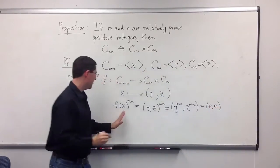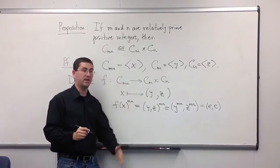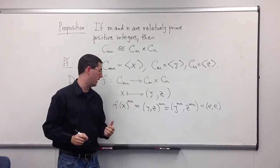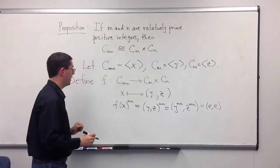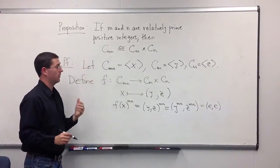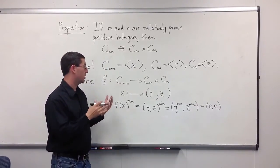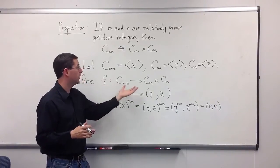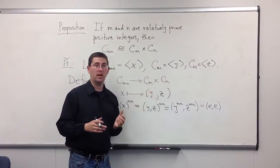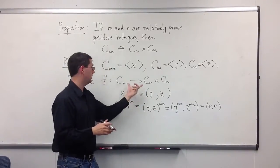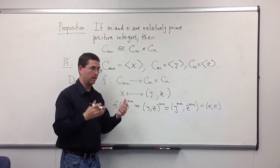This immediately tells us that since f applied to the generator satisfies the same relation as the generator, f is going to be a homomorphism. Now, how do we get that it's an isomorphism? Well, we're going to need that the image of f is going to be all of C_m cross C_n — then f would be onto — and since these are finite sets with the same size, we'll have an isomorphism.